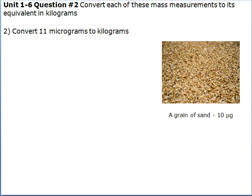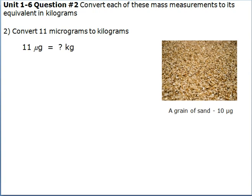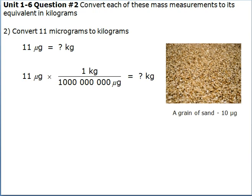Convert 11 micrograms to kilograms. First off, we know that there are 1,000,000,000 micrograms in a kilogram. Therefore, we must multiply 11 micrograms by 1 kilogram and divide the total by 1,000,000,000 micrograms as shown.